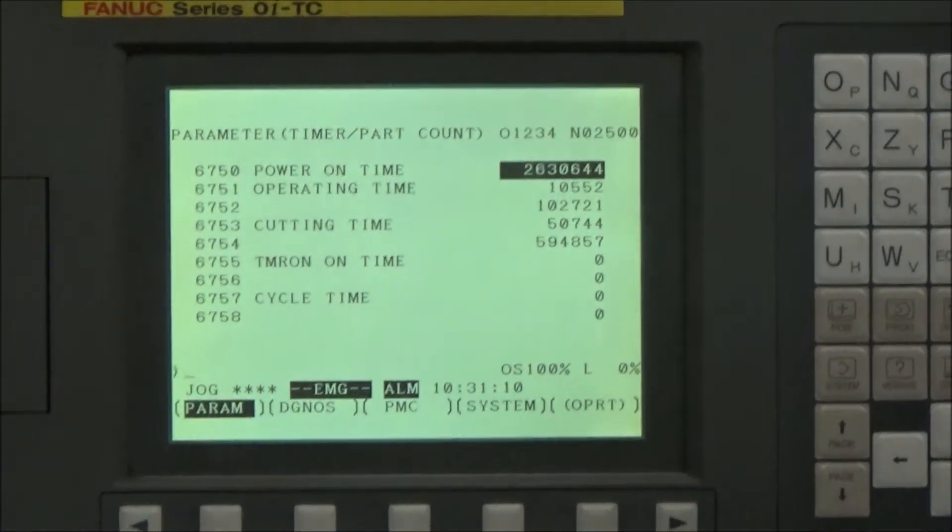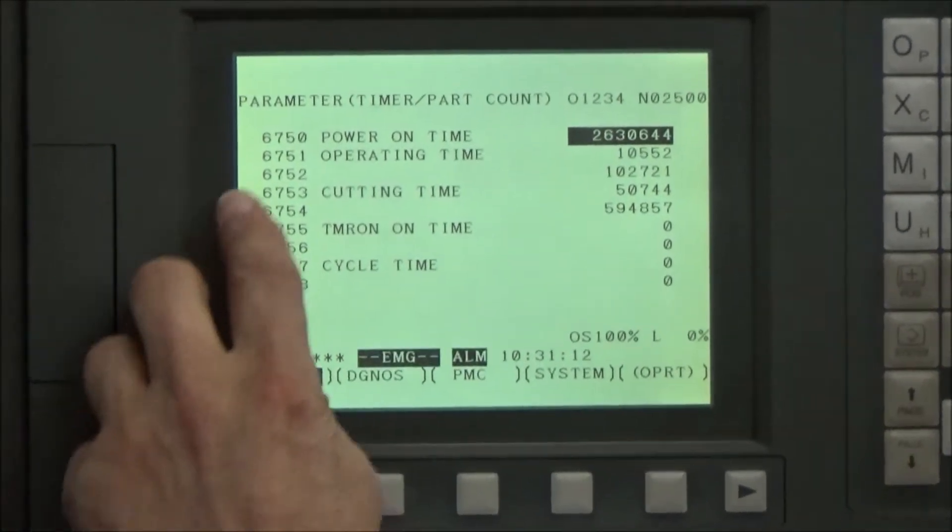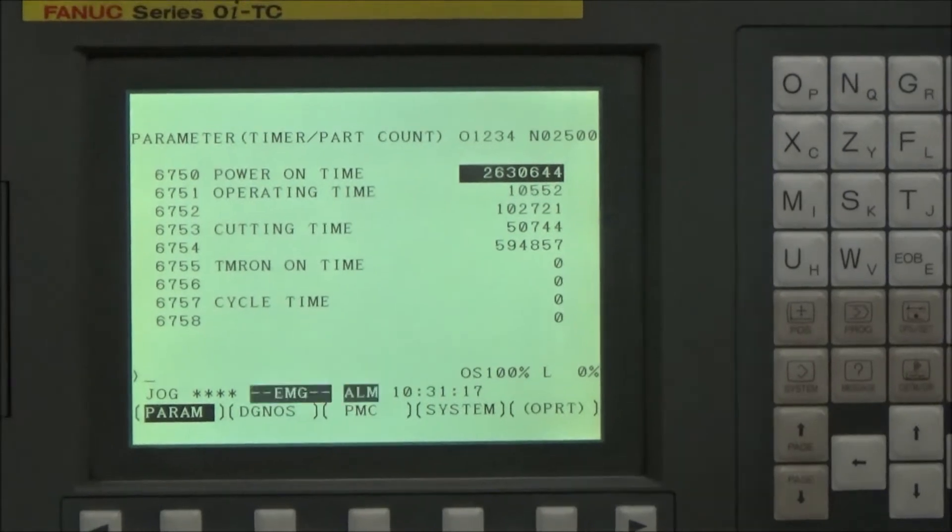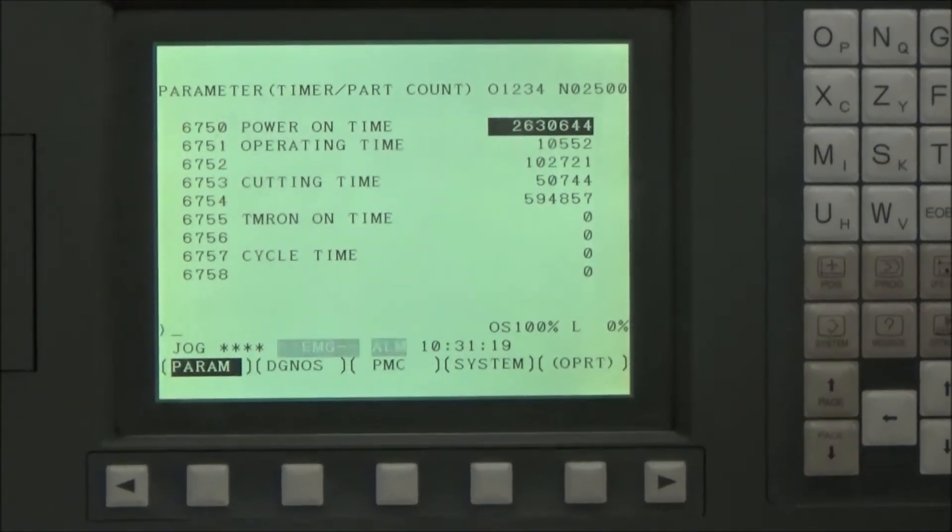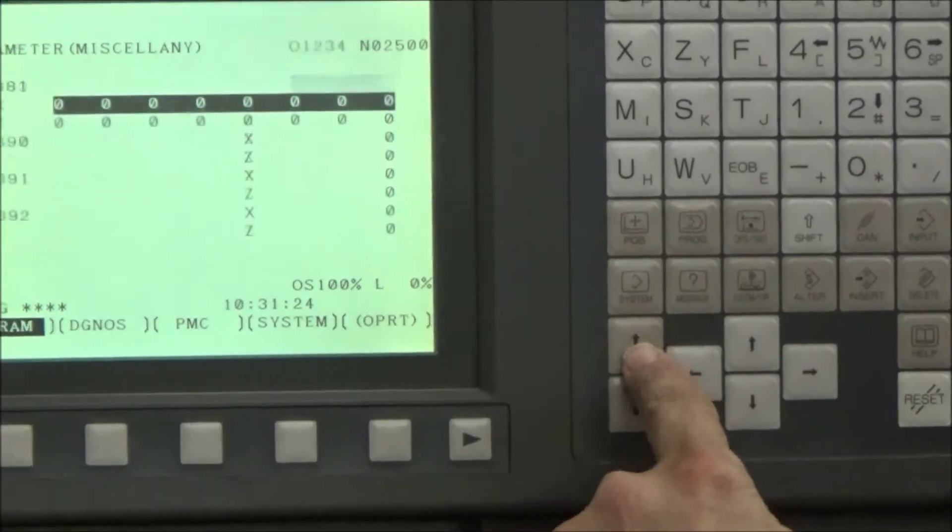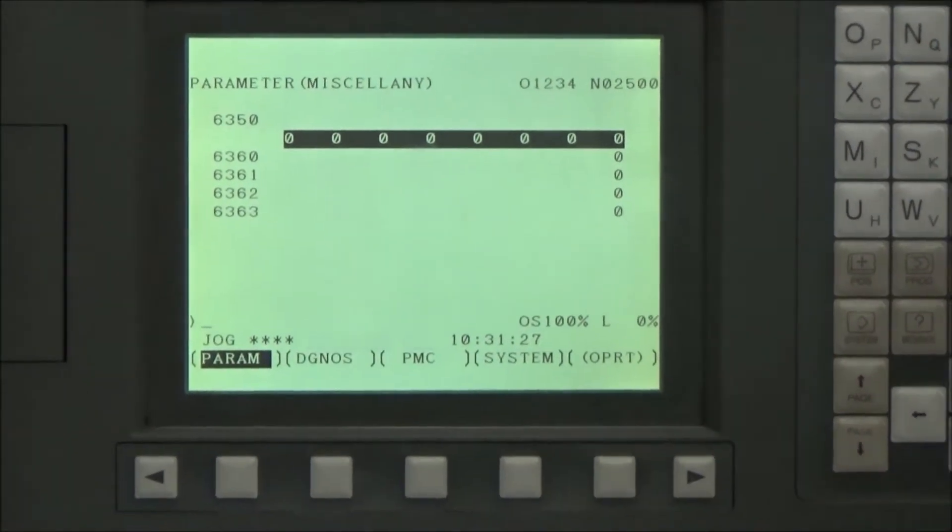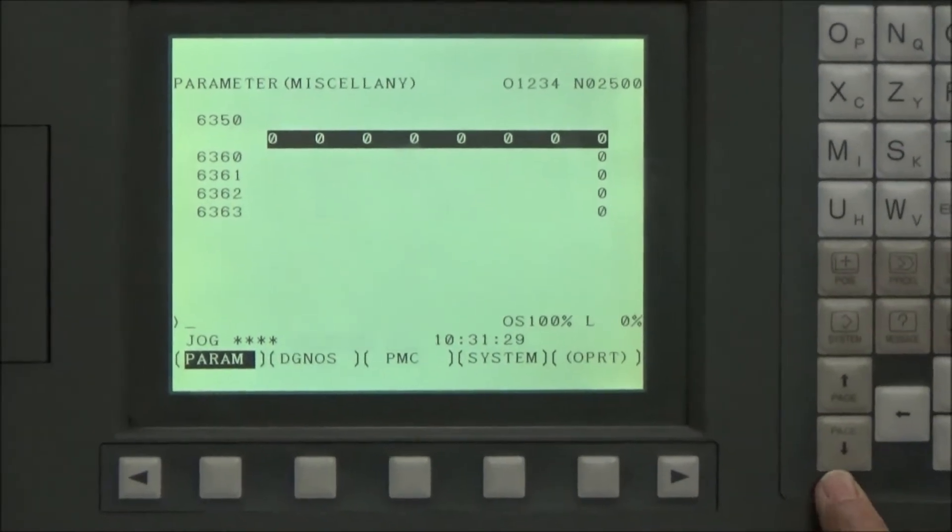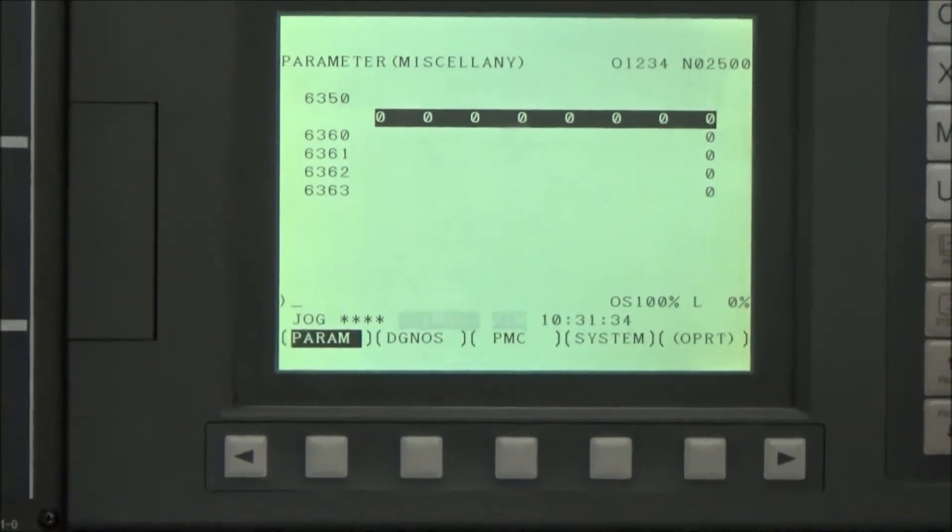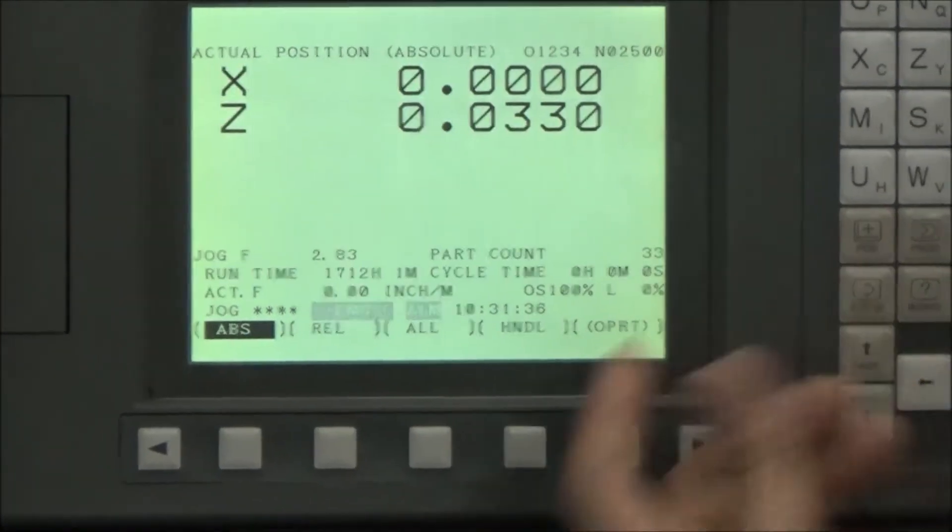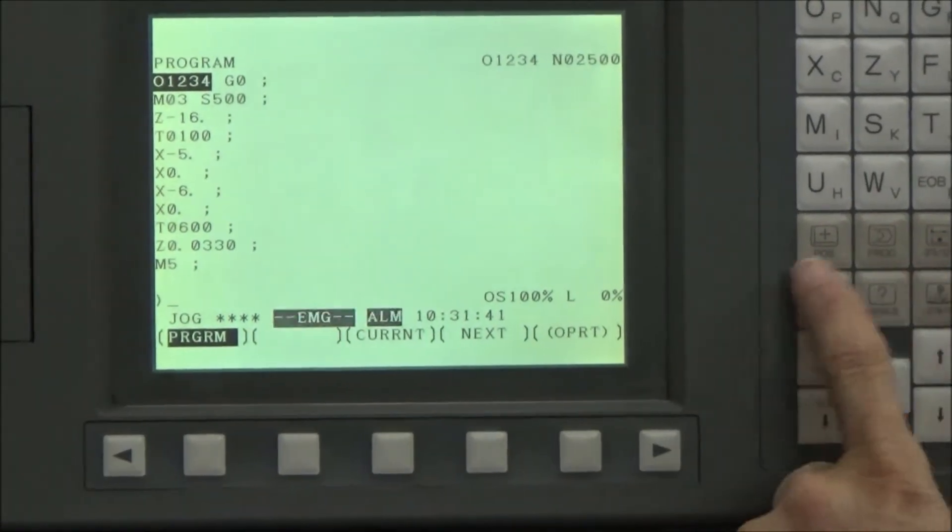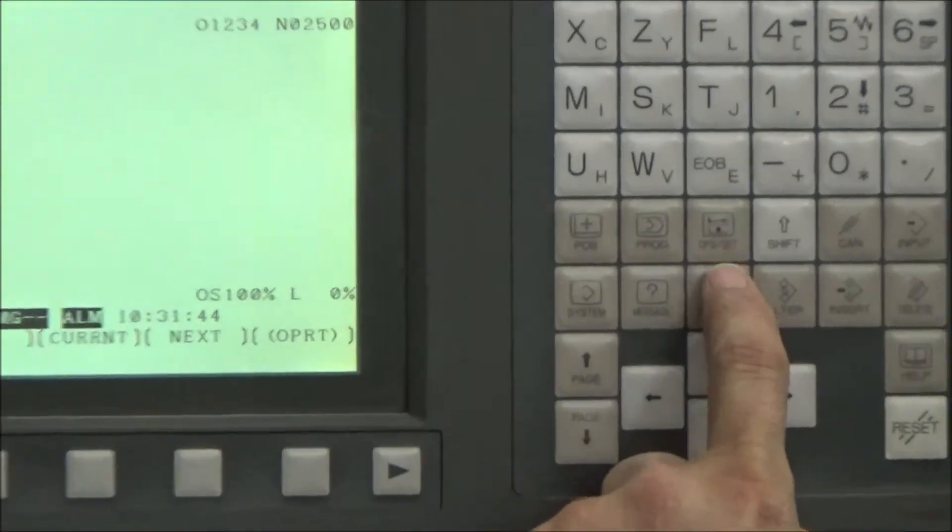So now we know how to get the hours out, but that is at a high parameter number at 6750. Let's pretend you turned the machine on and went to that system button, and it took you, as you can see these numbers go up here, you could be all the way up at line 10. Well, you'd be hitting this page down button forever. So it would be nice to be able to just type in the parameter line you want to go to.